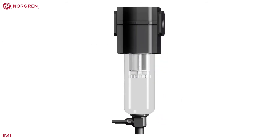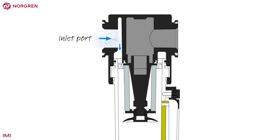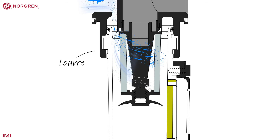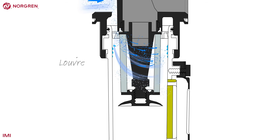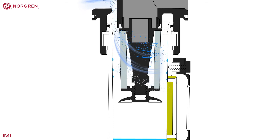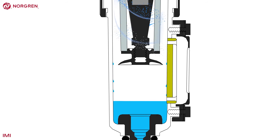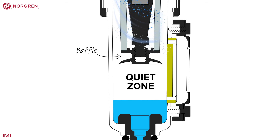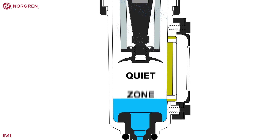Let's see how it works. The air enters the inlet port on the left before it hits the solid wall and is directed downwards. Any very large particles or water droplets will lose their momentum as they hit the wall and fall into the bowl below. As the air continues to move into the filter, it moves across the angled fins of the louvre, causing a cyclone effect. Momentum forces smaller water droplets to the outside of the bowl and gravity causes them to collect at the bottom. While the air is very turbulent above it, the baffle creates a quiet zone below it where the air isn't spinning.